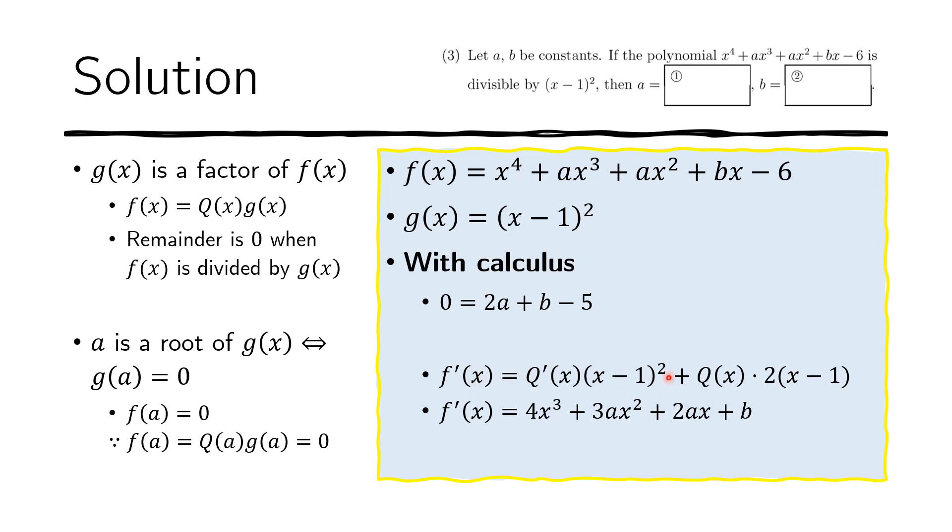I've already said that this will become zero if we plug in one. So if we plug in one for X, we get zero equals F prime of one. So we plug in one here. That's the first bit. The second bit is when we plug in one here. So we get 4, 3A, 2A plus B. And again, if we simplify this, we get 5A plus B plus four. And so we get zero equals this.